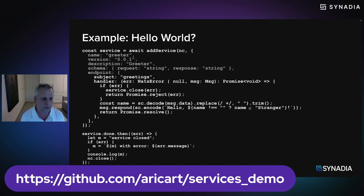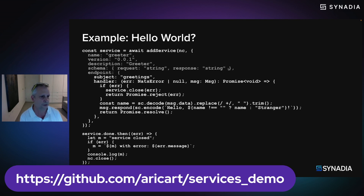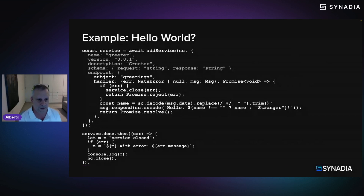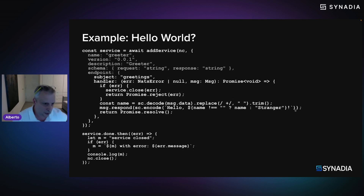I have a Hello World example here. We call the function to add the service, provide a NATS connection, and then provide metadata: the name of the service — which is 'greeter' — a version, a human-readable description, and a schema describing the inputs and outputs. Then we go to the endpoint, which is the subscription part: the subject the service subscribes to, and the handler function that processes requests. The handler looks at a message — if there's an error the service can handle it — otherwise it gets the data from the message, expecting a string, manipulates it, and returns a response: 'Hello' with the name found, or 'Hello Stranger' if nothing was provided.